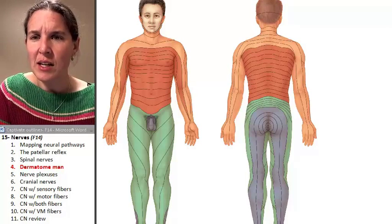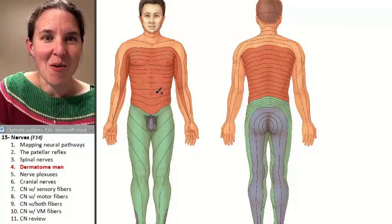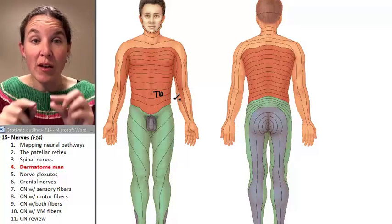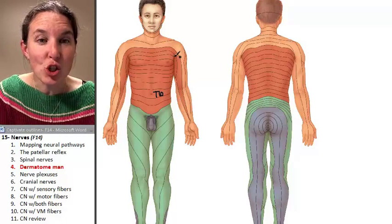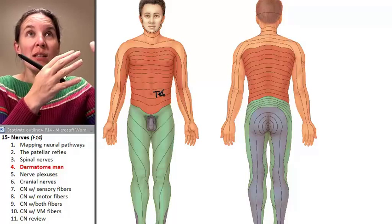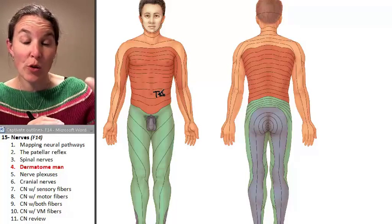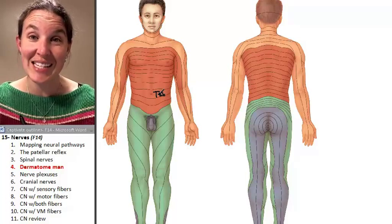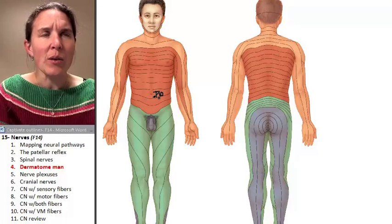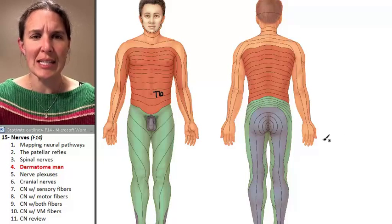I have the unlabeled version of Dermatome Man here. I have one dermatome memorized, and that is the belly button. This stripe of Dermatome Man represents the skin of the belly button. The sensory neurons that come from this stripe around your belly button travel through spinal nerve T10. Interestingly, the sensory information from your appendix also travels through T10.